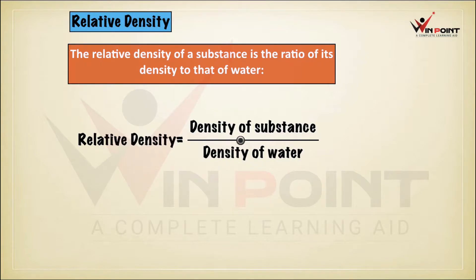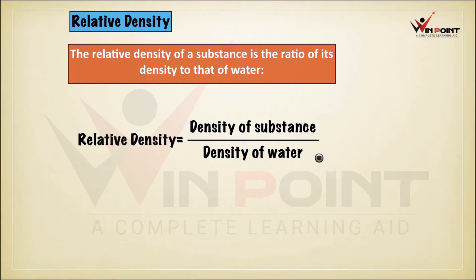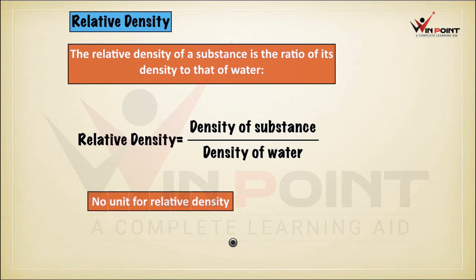Then what will be the unit of relative density? The unit of density is kilogram per meter cube — mass divided by volume. So it will be kilogram per meter cube. Since both numerator and denominator are in kilogram per meter cube, they cancel each other. Therefore, there is no unit for relative density.